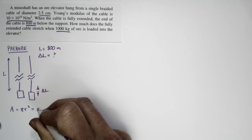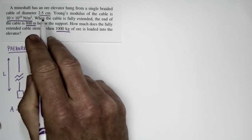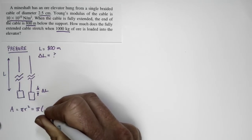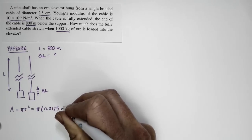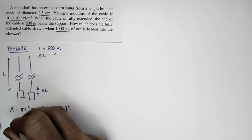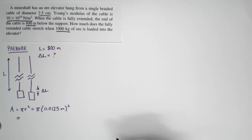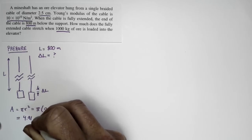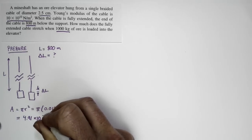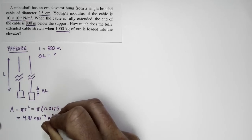We're not given the radius, we're given the diameter. The diameter is 2.5 centimeters, so the radius is half of that—1.25 centimeters, or 0.0125 meters. We can calculate the cross-section area of the cable, and if we do that, we get 4.91 times 10 to the minus 4 meters squared. We're going to keep an extra significant figure because this is an intermediate stage in the calculation.